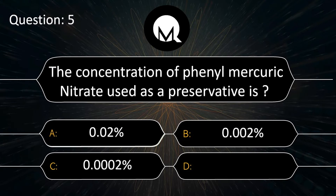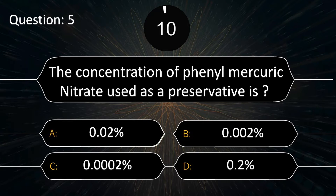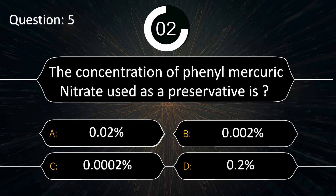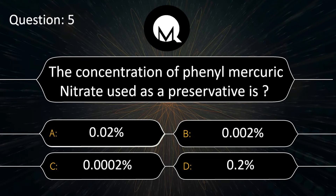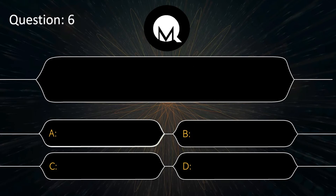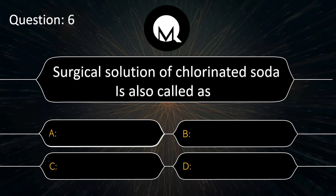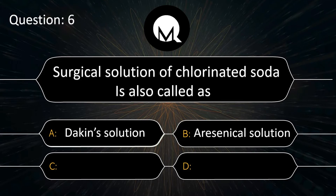The concentration of phenyl mercuric nitrate used as a preservative is: 0.02%, 0.002%, 0.0002%, or 0.2%? Answer is 0.002%.